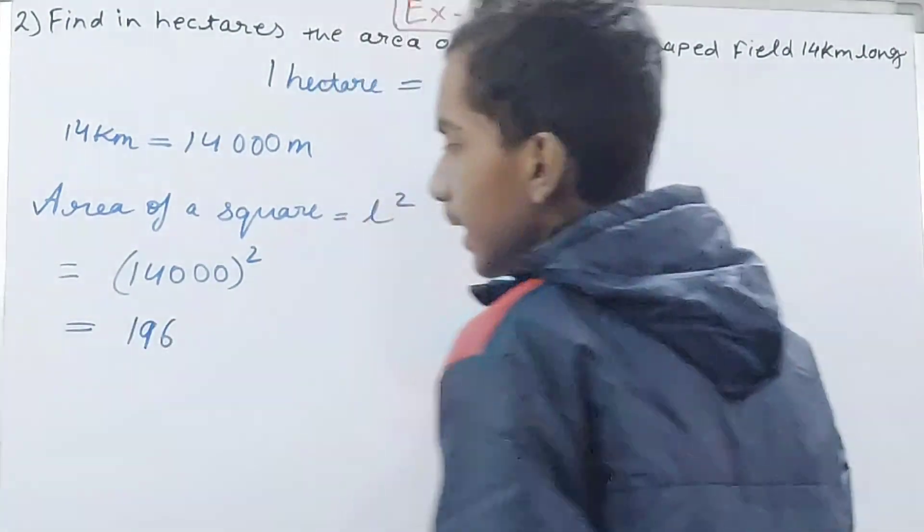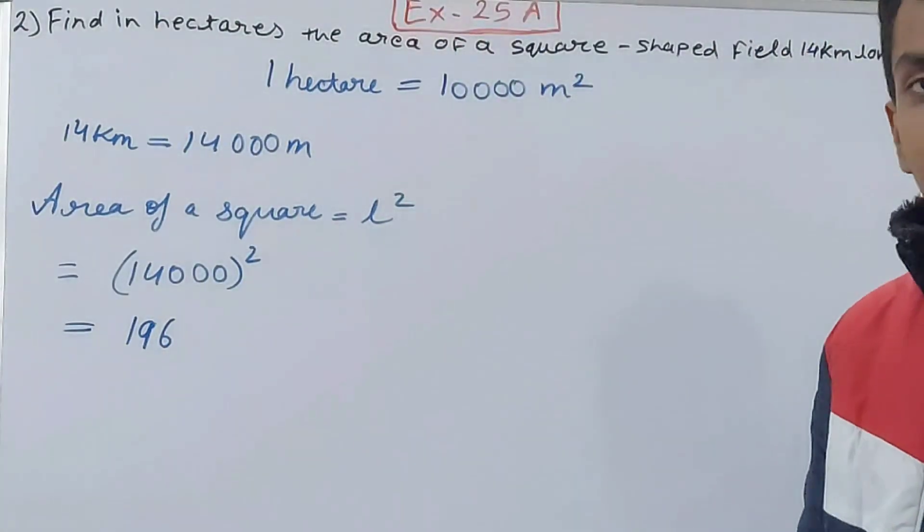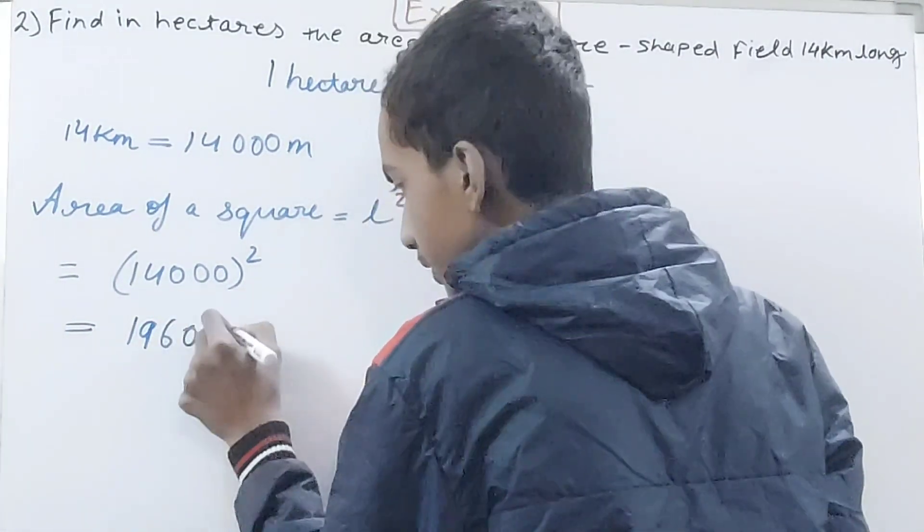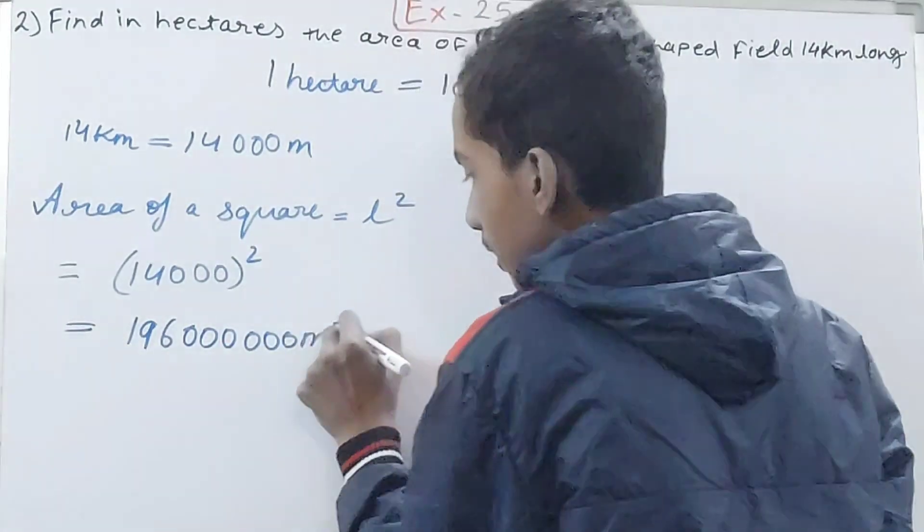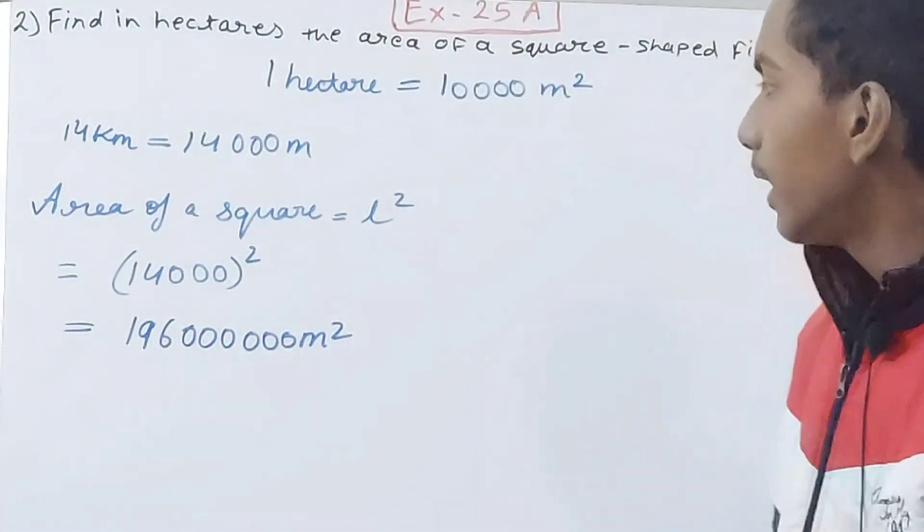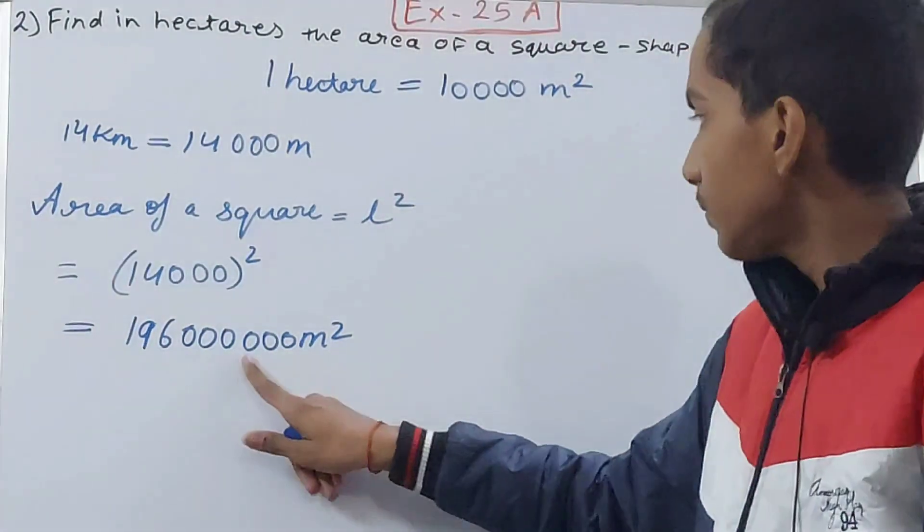In such cases just leave the zeros and square whatever is there. We have 14 here, so that will become 196. Square of 14 is 196. Now count three zeros, so double that many zeros and put them. Double of three is six, so six zeros. One, two, three, one, two, three, six zeros. And the unit, that is square meters.